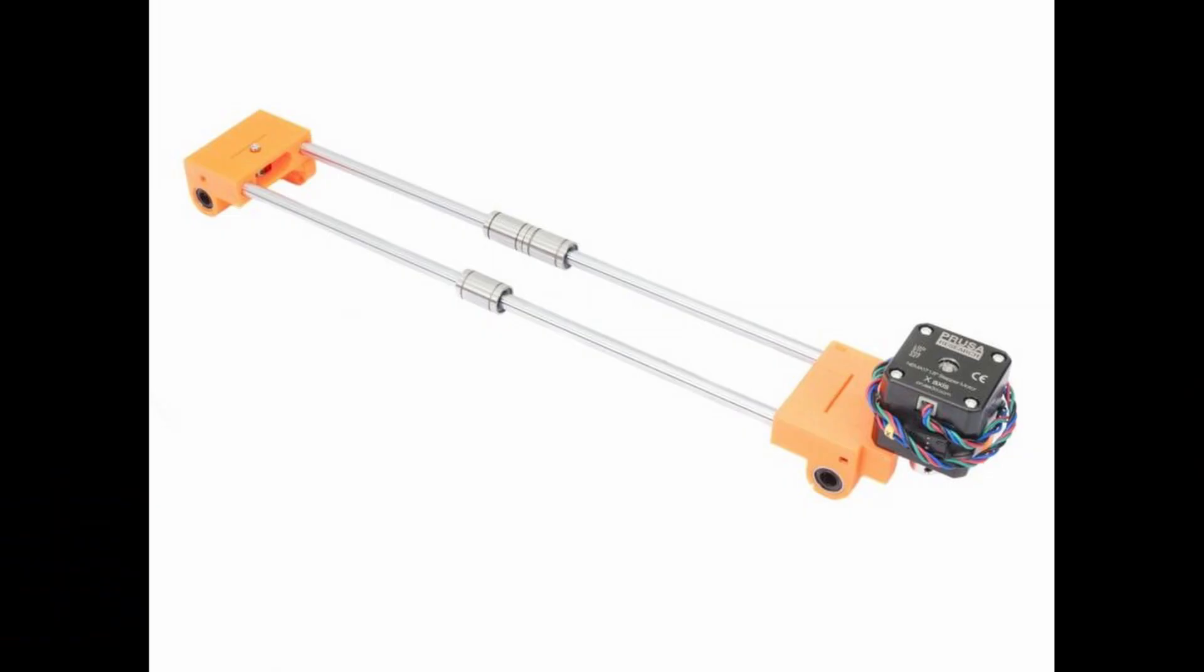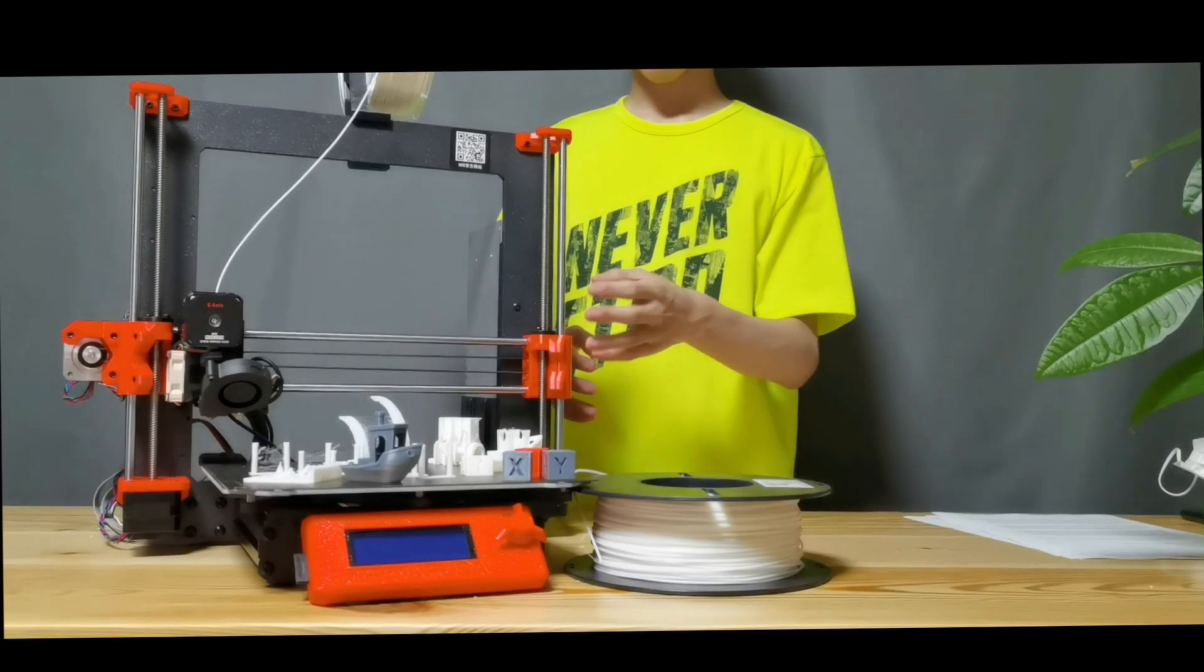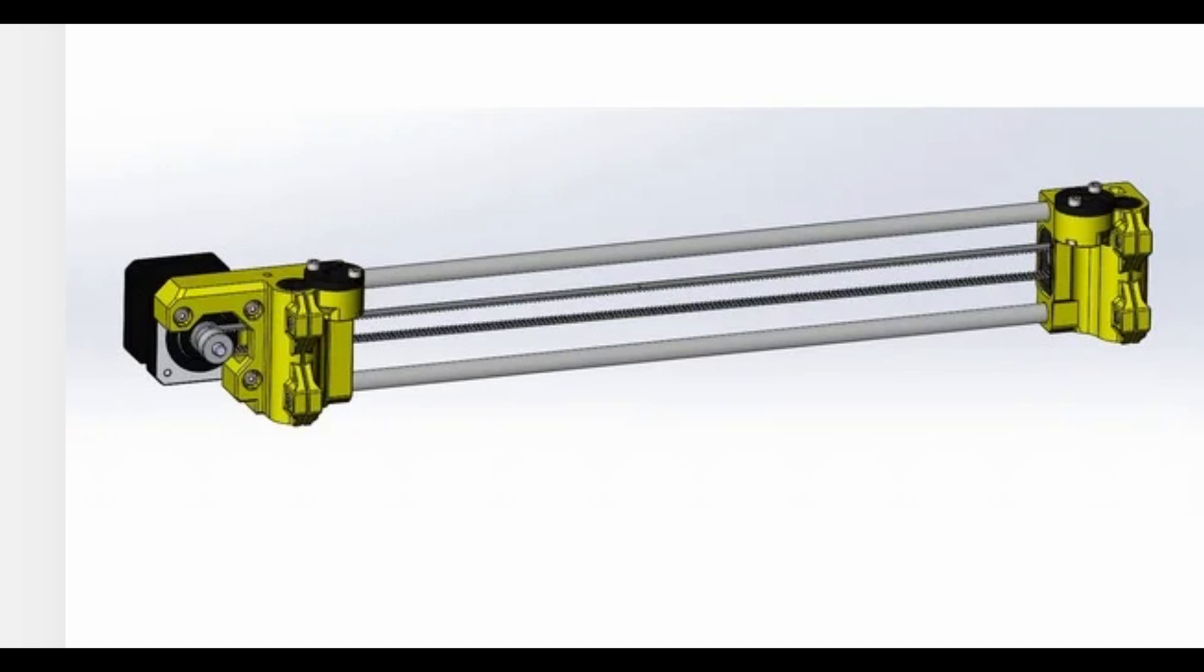Because this isn't their official design. In fact, here is the official Prusa design of the X-axis and this is the clone's design. This is just a bit beefier, and I think it's called the Caribou Bear X-axis.